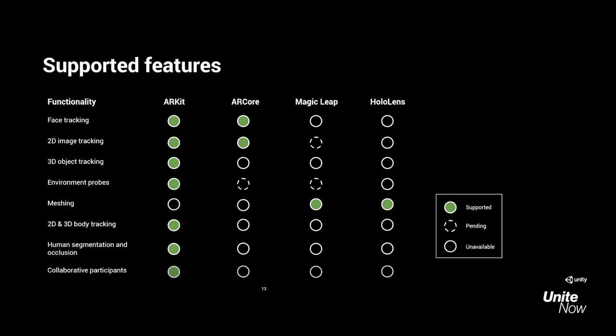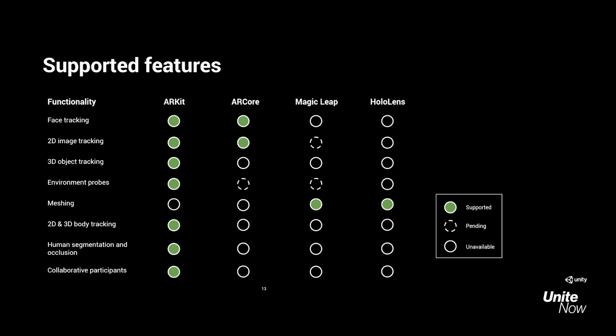Some more features include face tracking, 2D image tracking, 3D object tracking, and more. The last three features — 2D and 3D body tracking, human segmentation and occlusion, and collaborative participants — are only available on the ARKit platform, enabled through ARKit 3.0, which is only available in AR Foundation. Even though these features are only supported on ARKit right now, if any of the other platforms add a similar feature, we've set up the hooks inside AR Foundation to easily link those in. As a developer, you simply have to update your packages — not rebuild your app from scratch.